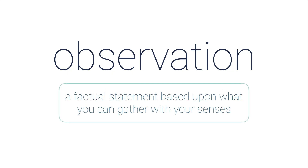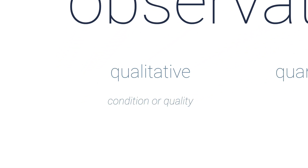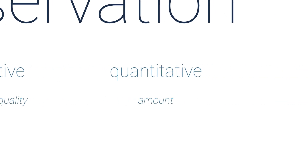So first let's define what an observation is. An observation is a factual statement based upon what you can gather with your senses. There are two types of observations. A qualitative observation speaks to the condition or the quality of something like the color or the age. A quantitative observation tells us an amount, like it is 75 degrees outside or this weighs 2.6 grams.